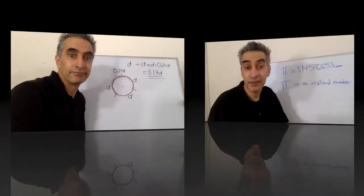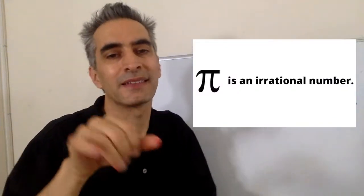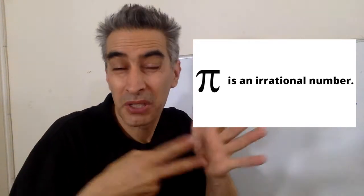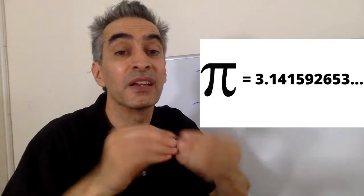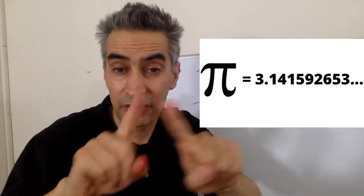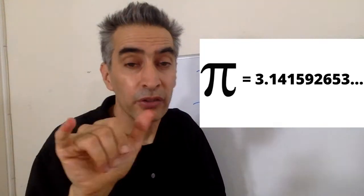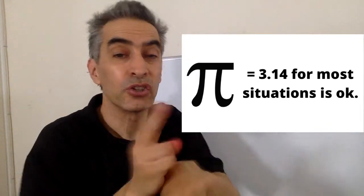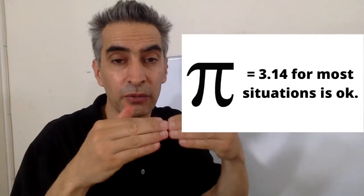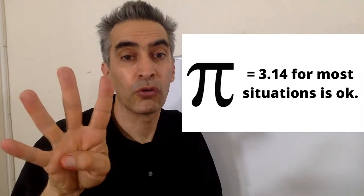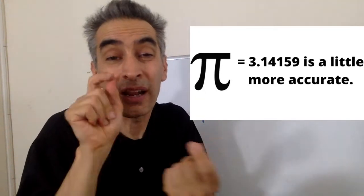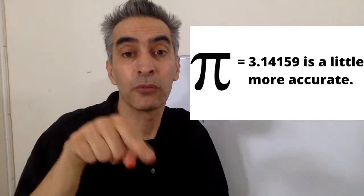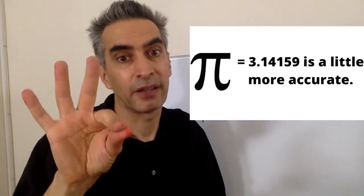Yes, pi is an irrational number. That means it continues on forever and ever. But for most situations, we can say that pi equals 3.14. If you want something a little more accurate, you can use pi equals 3.14159.